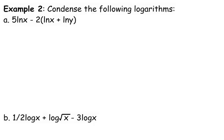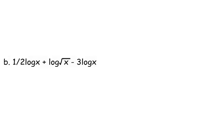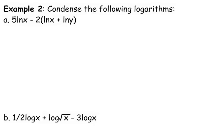Let's look at condensing logarithms — let's go the other way. Let's express this in as few logarithms as possible. We have 5 times the natural log of x minus 2, and in parentheses, we have the natural log of x plus the natural log of y. A couple of things jump out: I have a coefficient in front of my first logarithm — that's the power rule. And I have two logarithms being added together — that's my product rule. There's also a coefficient in front of that group.